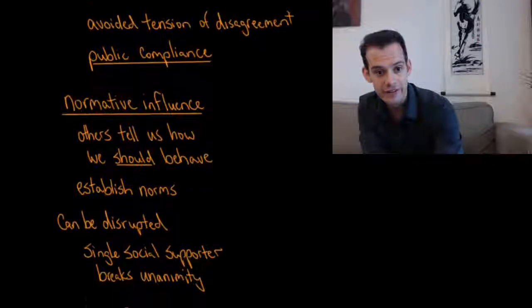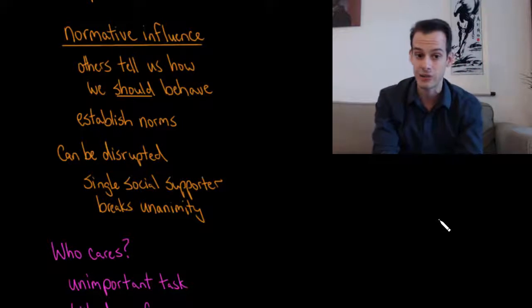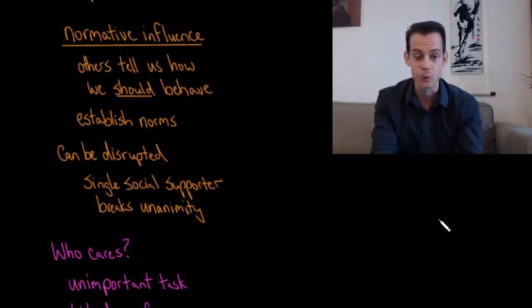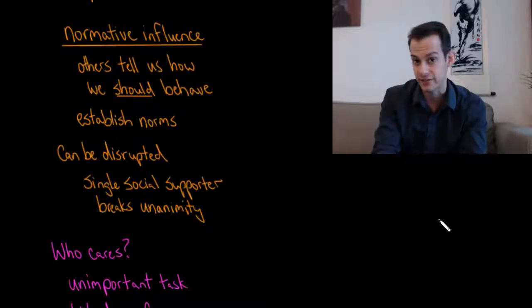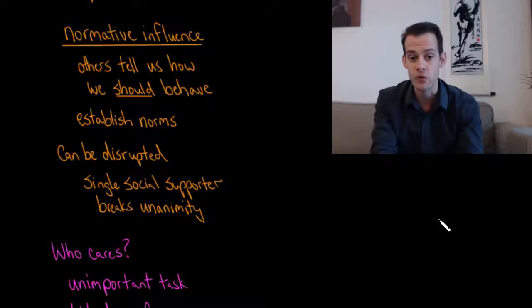And this brings us to the idea of what's called normative influence. So it's not just the case that other people provide us with information about the correct answer. They also tell us how we should behave. They establish norms. And those norms tell us how we're supposed to act in a certain situation. In this case, we're supposed to say the answer is 2, even though we actually believe it to be 3. Now, this normative influence can be easily disrupted. And Asch demonstrated this in another variation of the study, where he had what he called a social supporter. And this was one confederate who would break the unanimity of the group and give the correct response. And what Asch found is, as soon as one person disagreed with the group, it became much easier for the actual participants to also disagree. And conformity dropped.